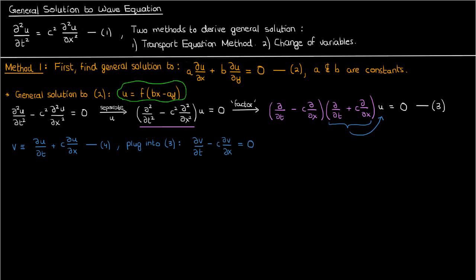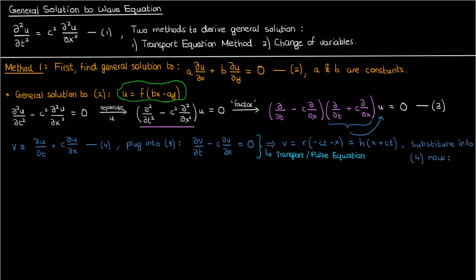The solution in this case is v equals a pure function of negative ct minus x, which is just another pure function of x plus ct — since we can absorb the negative one as it's just a constant. This PDE is a pretty important one called the transport equation, sometimes also the pulse equation. Using the definition of v in equation 4, we set up another differential equation for u: du/dt plus c times du/dx equals h of x plus ct. I'll call this equation 5.